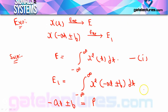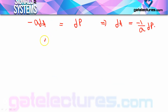Now calculate the new limits. When t = -∞, because of the minus sign already present, p becomes +∞. When t = +∞, p becomes -∞. So the limits of integration in p go from +∞ (lower) to -∞ (upper).